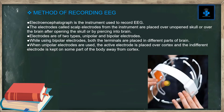Method of recording EEG: the electroencephalogram is the instrument used to record EEG. The electrodes, called scalp electrodes, are placed over an unopened skull, or over the brain after opening the skull, or by piercing into the brain. Electrodes are of two types: unipolar and bipolar. While using bipolar electrodes, both terminals are placed in different parts of the brain. When unipolar electrodes are used, the active electrode is placed over the cortex and the indifferent electrode is kept on some part of the body away from the cortex.